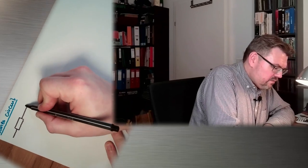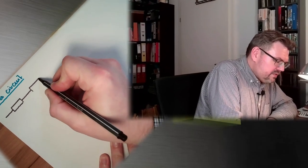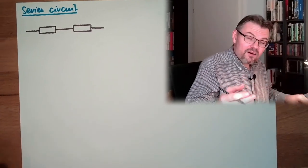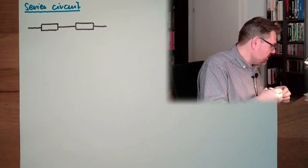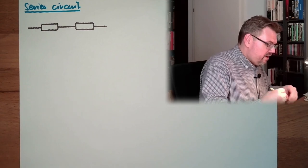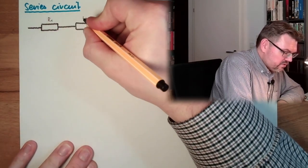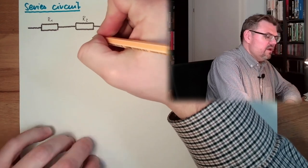What is a series connection? Let's say we have two resistors. We have one resistor and a second resistor as well. Those two resistors are connected exactly in the way I have drawn, in a series, one after the other. So we have here the resistor R1 and in a series connection, R2.